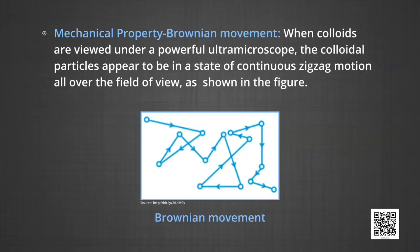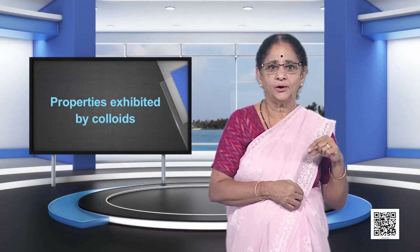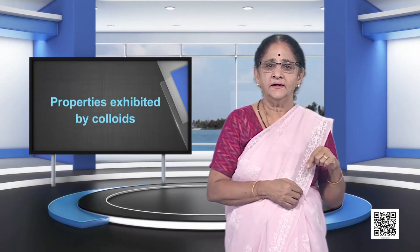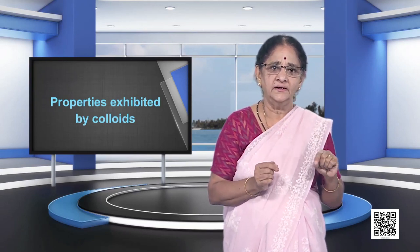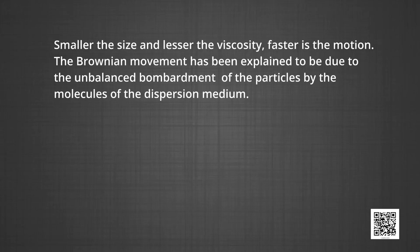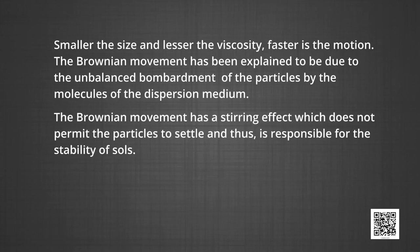Number four, mechanical property — Brownian movement. When colloids are viewed under a powerful ultramicroscope, the colloidal particles appear to be in a state of continuous zigzag motion all over the field of view. This motion was first observed by British botanist Robert Brown and is known as Brownian movement. This motion is independent of the nature of the colloid but depends upon the size of the particles and viscosity of the solution — smaller size and lesser viscosity means faster motion. Brownian movement is due to unbalanced bombardment of the particles by the molecules of the dispersion medium, and has a stirring effect that prevents particles from settling, thus contributing to the stability of sols.